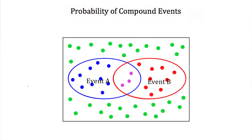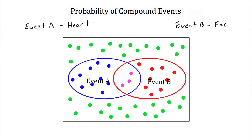Let's look at an example. Let's say event A is pulling a heart out of a deck of 52 cards, and event B is pulling a face card out of a deck of 52 cards.